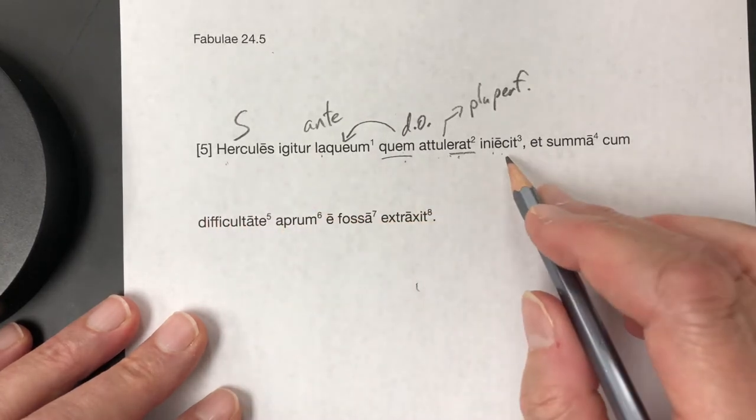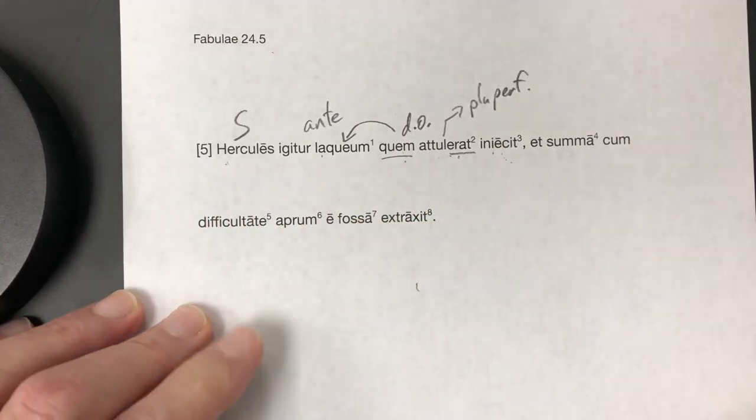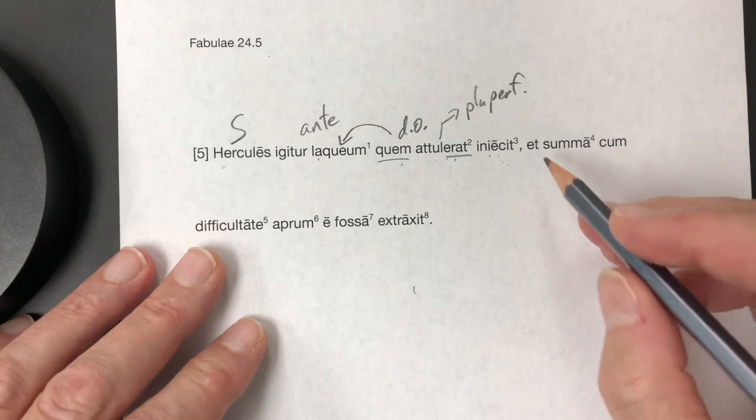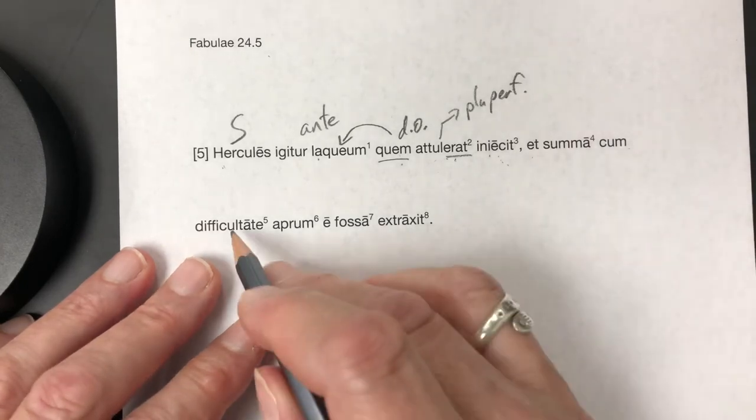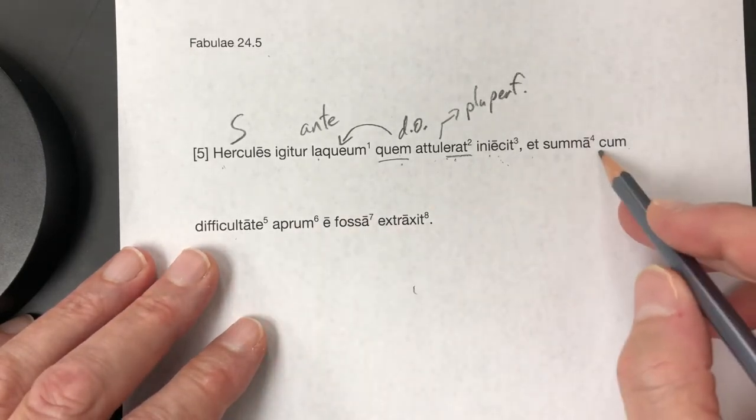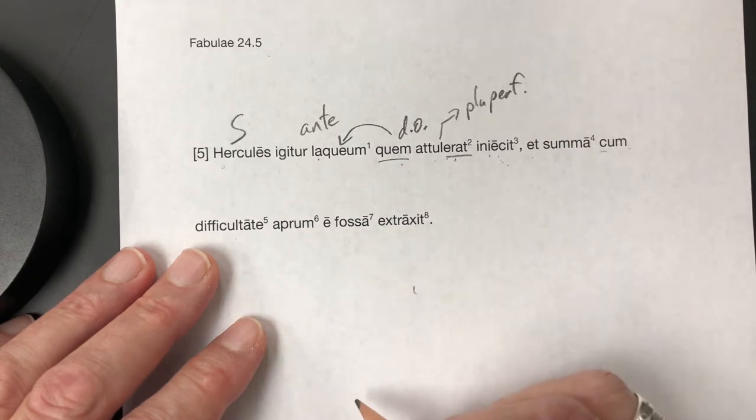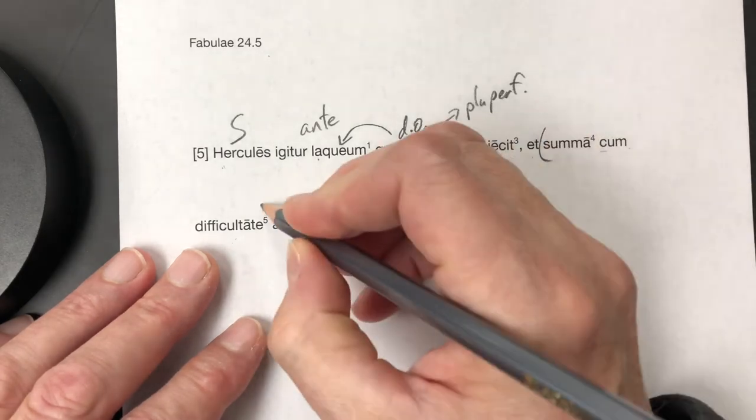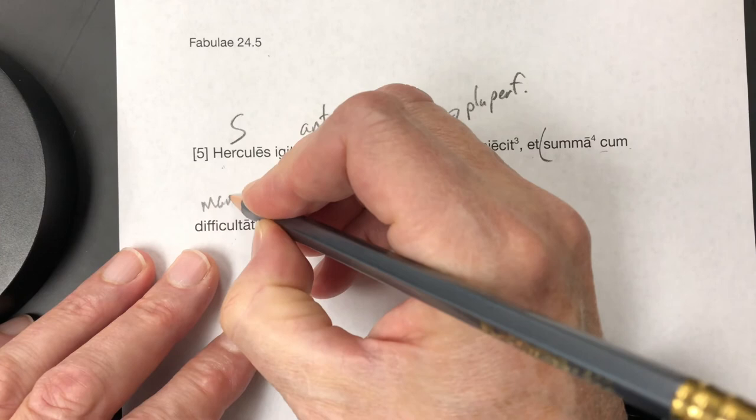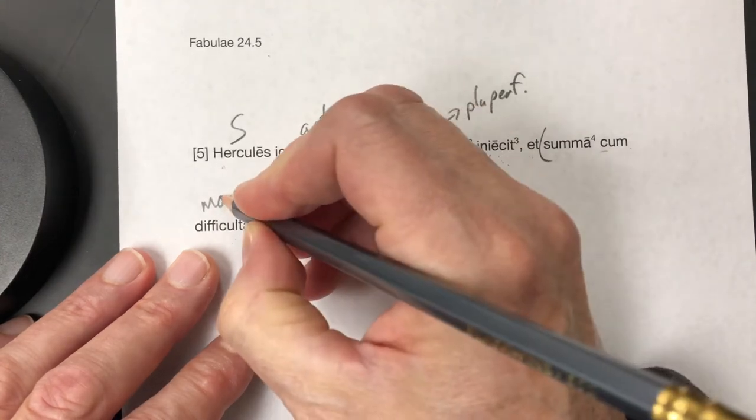Hercules threw the lasso. At summa cum dificultate, and with the greatest difficulty. That's an ablative of manner there. Well, it's an ablative that describes how.